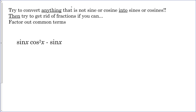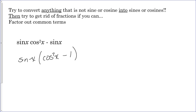Let's look at this example: sine of x times cosine squared of x minus sine of x. We're already in sines and cosines, so we don't need to convert. There are no fractions. Now factor out common terms — both sides of the minus sign have a sine x, so we factor out the sine x. On the left we're left with cosine squared, and on the right sine divided by sine is one.